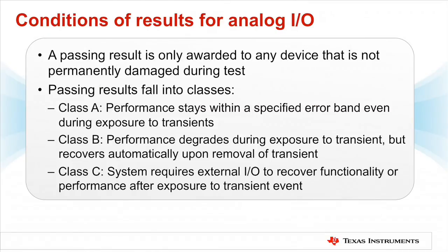Any system that is not permanently damaged from exposure to these tests receives a passing result. Units that do pass the test are awarded results that fall into various classes. Class A systems perform within a specified band, even while being exposed to the transient signals. Class B systems exhibit degraded performance during exposure to the transient, but recover automatically. Class C systems require external interaction to recover from exposure to the transient event.